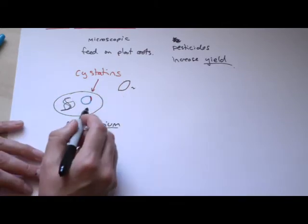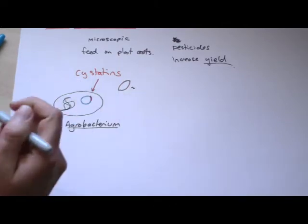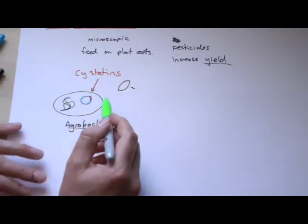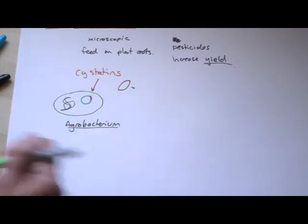They then allowed this agrobacterium to infect plants. You might think of plant cells, you might think that sounds odd. But what it was doing is it was putting in this cystatin gene into those plant cells.